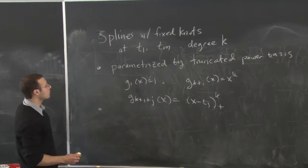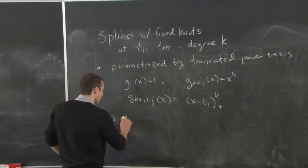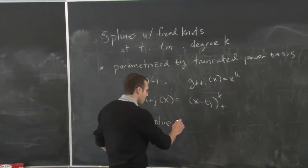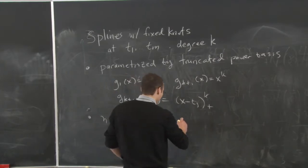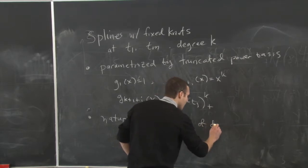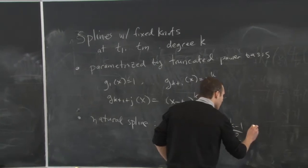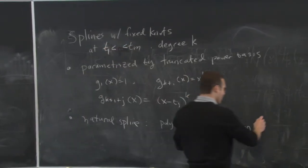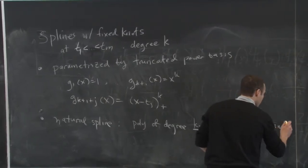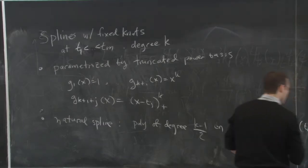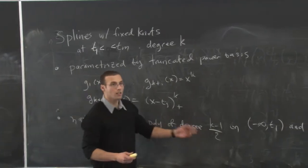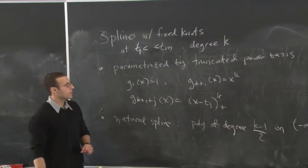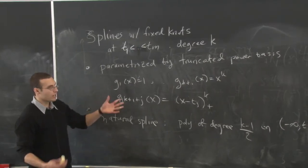Then a slightly different tweak is the natural spline. Natural splines have the same degree K and knots at T1 through Tm. The distinction is now that it's a polynomial of degree K minus 1 over 2 on minus infinity to T1, and Tm to infinity. The case, remember, is when K is 3: a cubic natural spline is linear to the left of T1 and to the right of Tm. They also have a parametrization using the truncated power basis, although we didn't go through that in class.